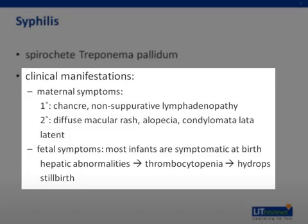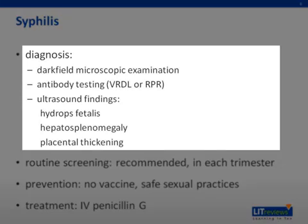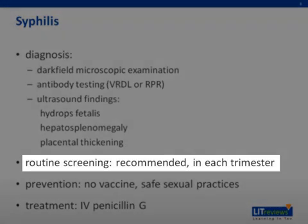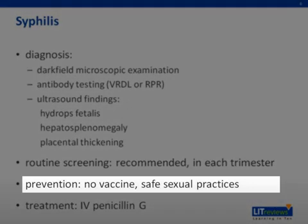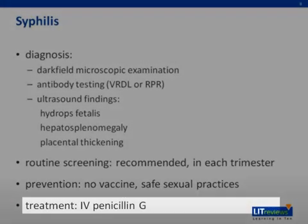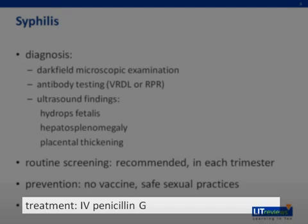Primary infection presents with a chancre and non-suppurative lymphadenopathy. Secondary syphilis presents with diffuse macular rash which may involve the palms and soles, petechiae, alopecia, condylomata lata, lymphadenopathy, pneumonia, and myocarditis. The third stage is the latent phase. Diagnosis involves direct visualization of the spirochete using darkfield microscopy and serologic testing for anti-treponemal antibodies using the VDRL or RPR tests. Fetal infection is suspected with certain ultrasound findings including hydrops, ascites, or placental thickening, though infected fetuses often have normal ultrasounds. Routine screening is recommended in each trimester. Syphilis is transmitted sexually, so the most effective prevention is barrier contraception. It can be treated with IV penicillin G, and penicillin desensitization is recommended in penicillin-allergic pregnant women to ensure adequate treatment of the fetus.